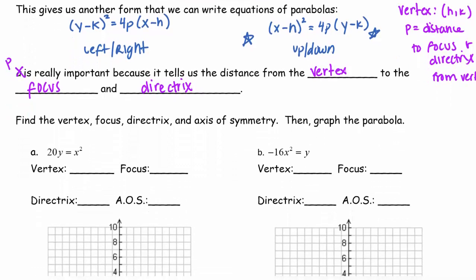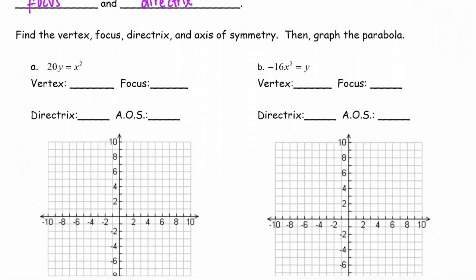So let's do an example so you guys can get a better understanding of what I'm talking about. So when you're given an equation, the first thing I need you to do is make sure that the squared term is alone. So we need that square term to be by itself, which in part a it is, so that's good.